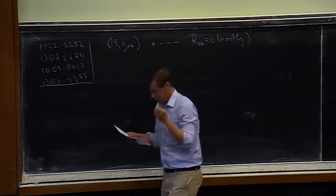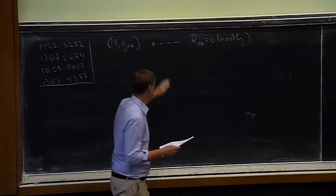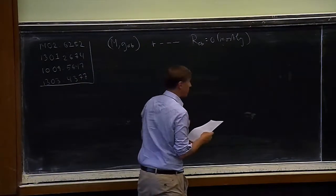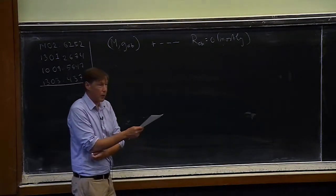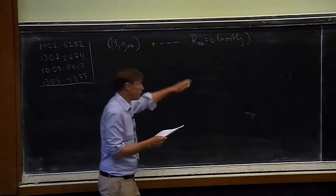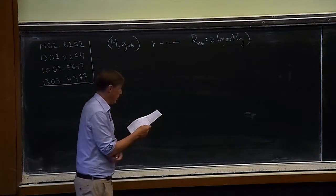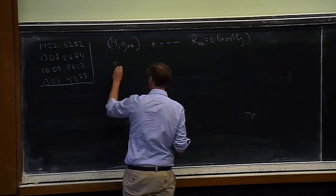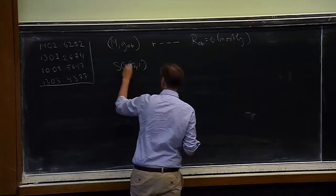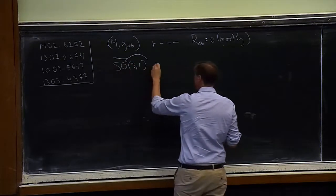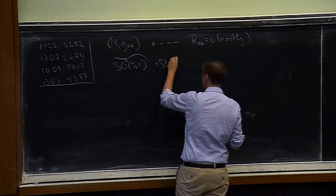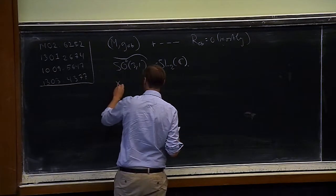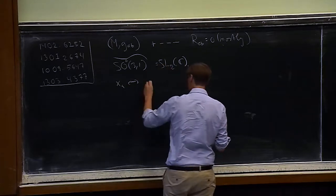I'm going to look at Lorentzian spacetimes. Since we're using spinor methods, this is the natural signature. Much of what I say actually works quite generally, but for simplicity you can think about the vacuum case. A very important feature in this setting is that the Lorentz group, as is well known, is double covered by SL2C.